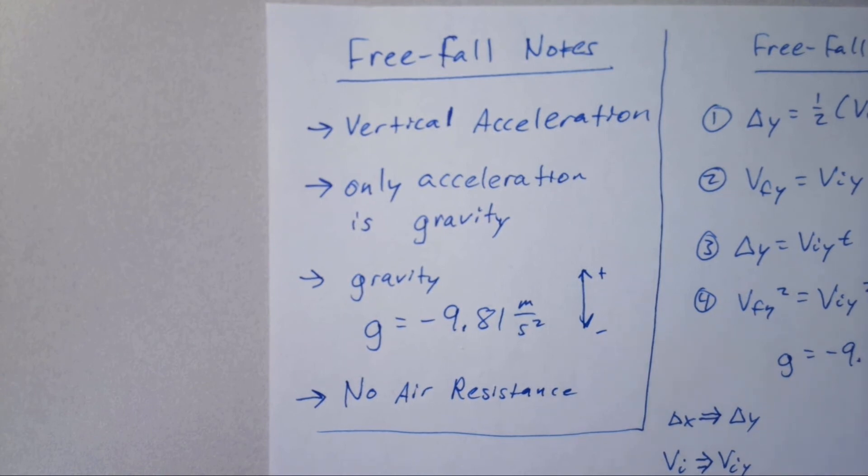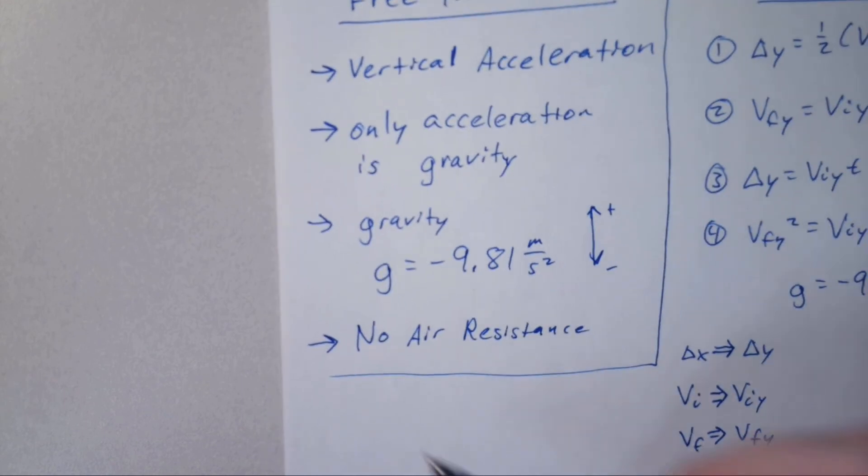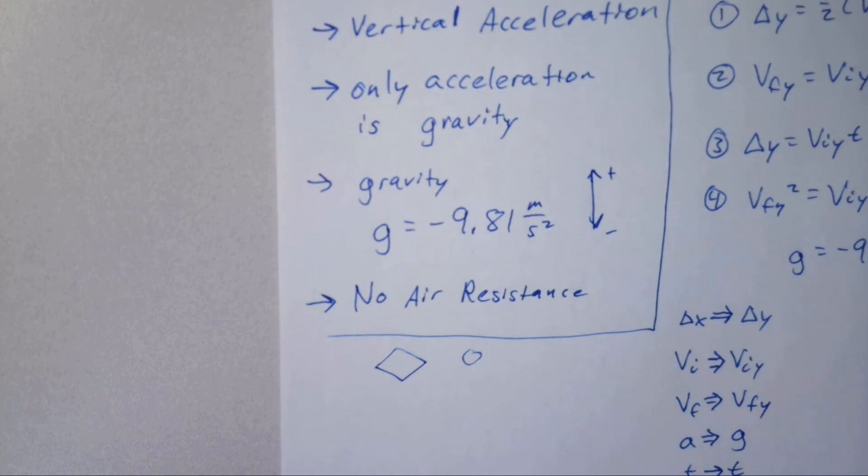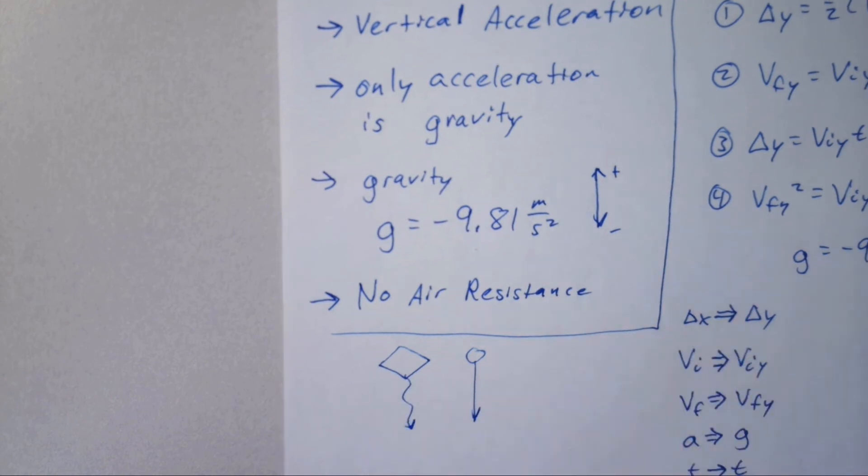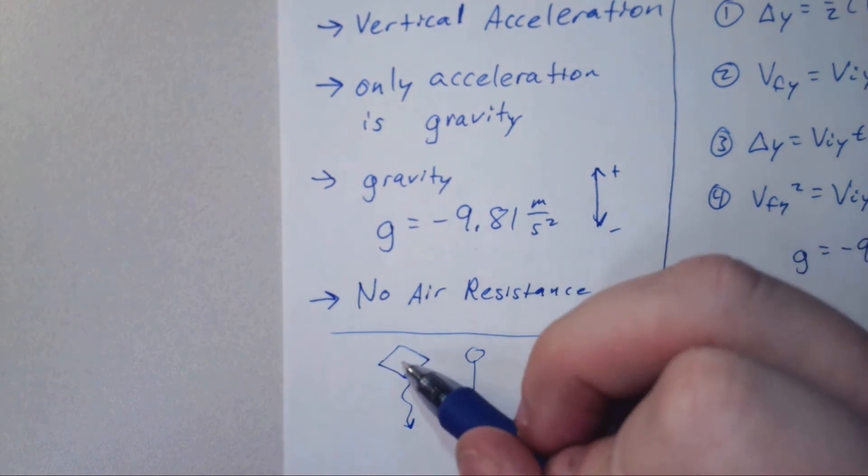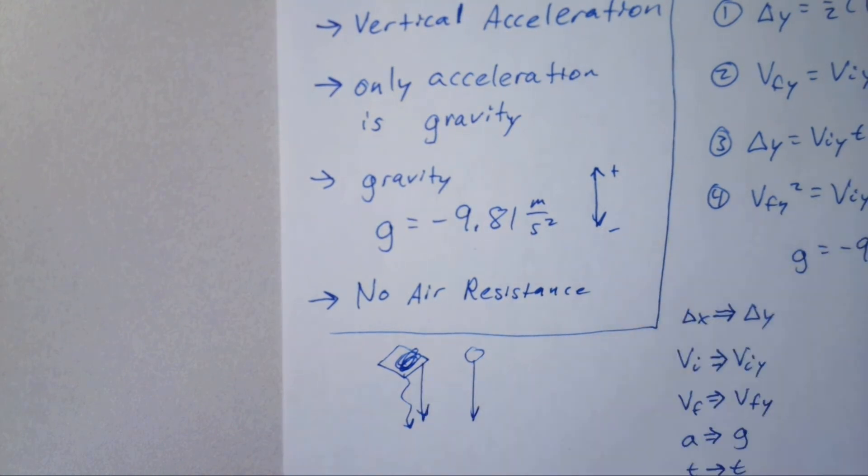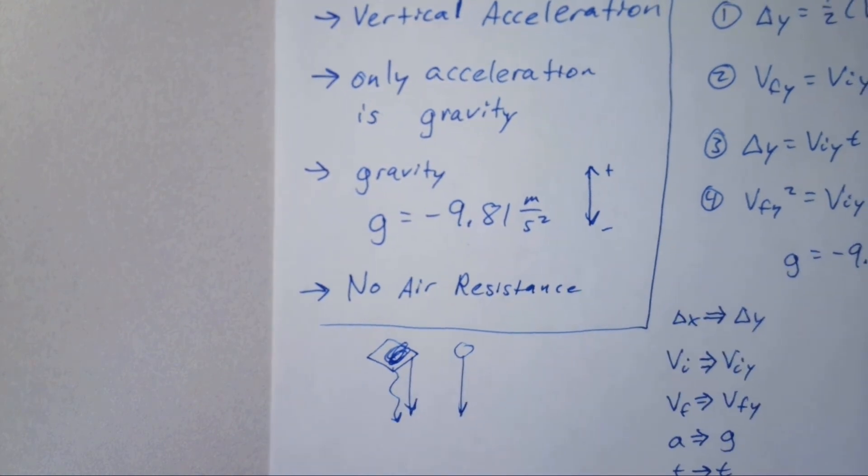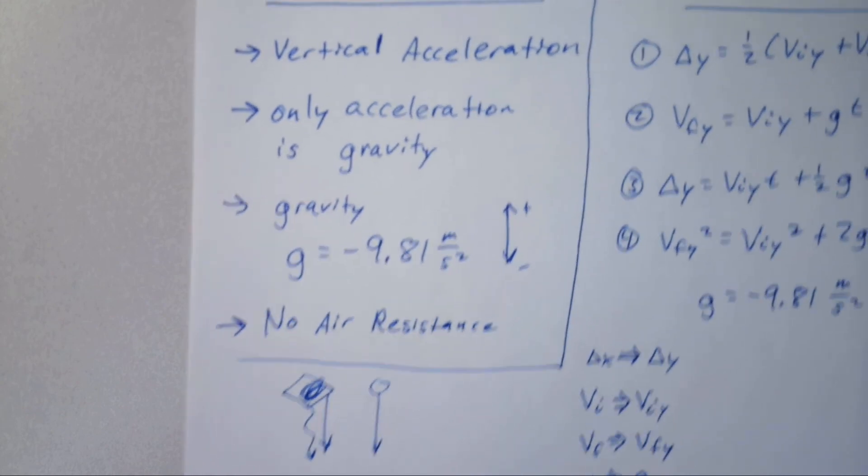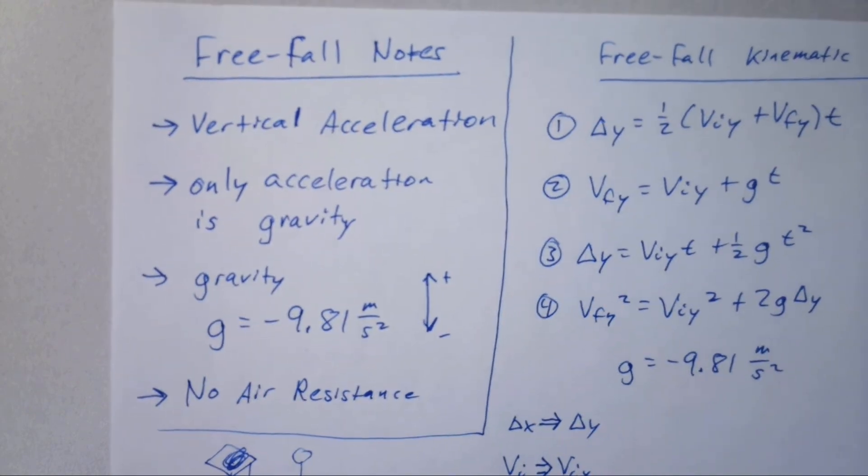I talked about in class today that if I drop a piece of paper and a ball, they would fall at the same rate, but the ball looks like it falls faster because the paper is affected by air resistance. If I crumple the paper into a ball, it would fall at the same rate. Keep in mind that there won't be any air resistance in this class.